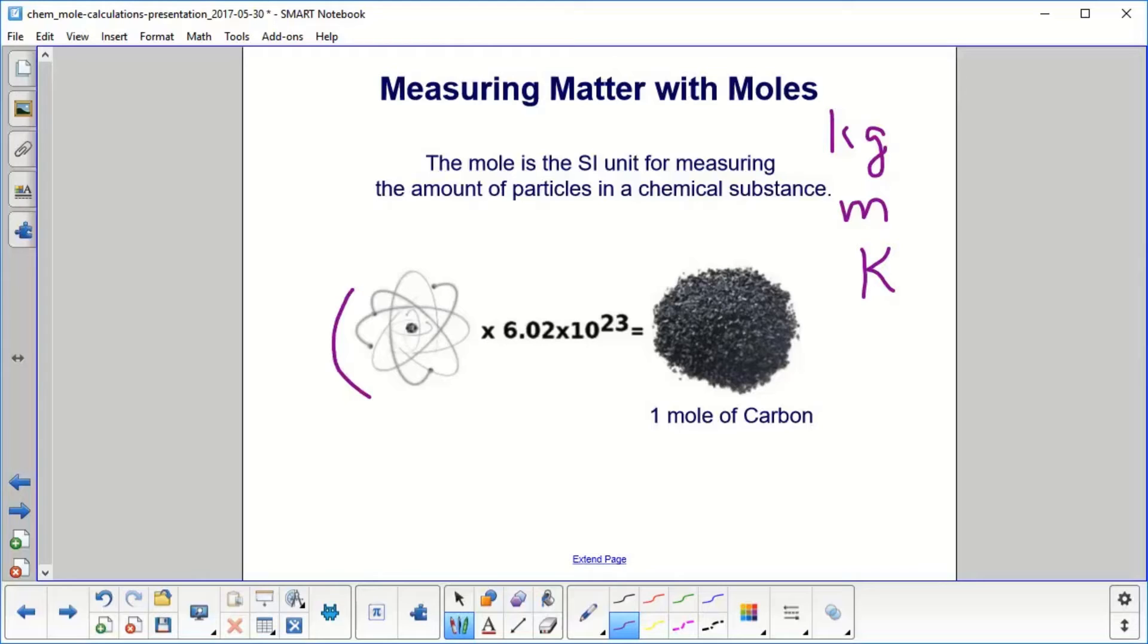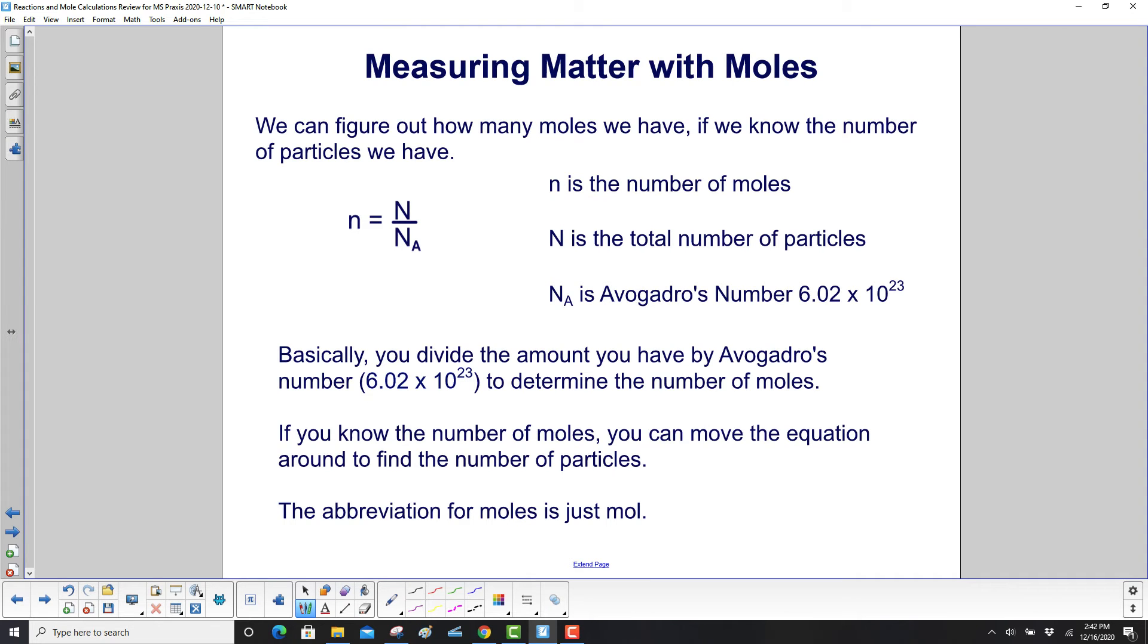So this picture here, one atom times 6.02 × 10^23 gives you one mole of carbon. And this over here is a carbon atom. We can figure out how many moles we have if we know the number of particles we have. So n is the number of moles, little n. Capital N is the total number of particles. And N_A is Avogadro's number, 6.02 × 10^23.